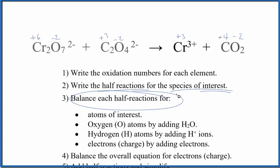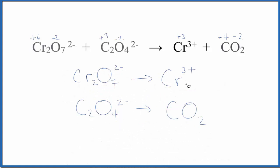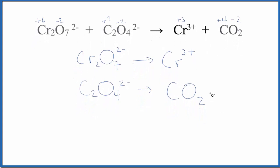Let's write the half reactions. Chromium went from +6 to +3, so each chromium atom was reduced. Each carbon went from +3 to +4, losing electrons, so it's been oxidized.